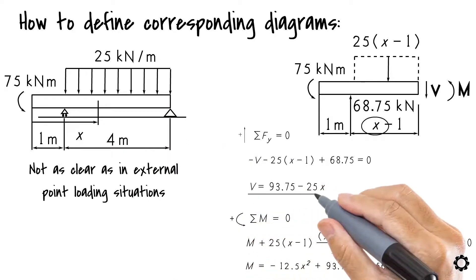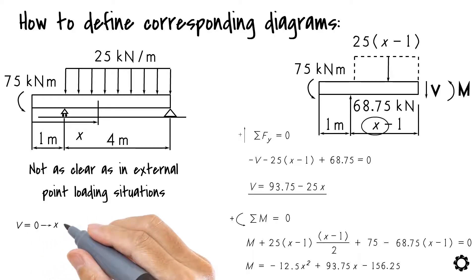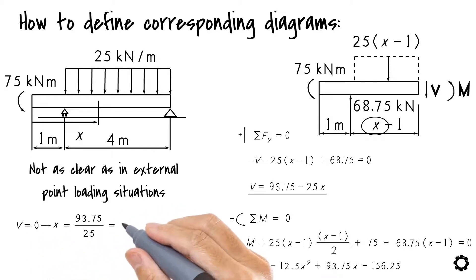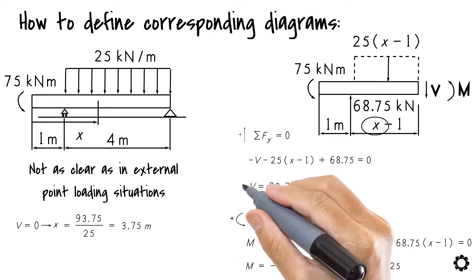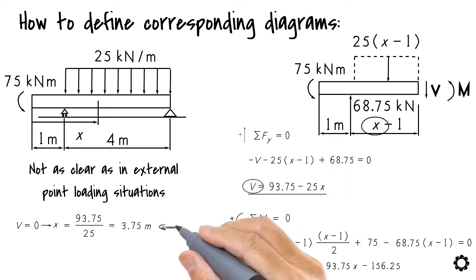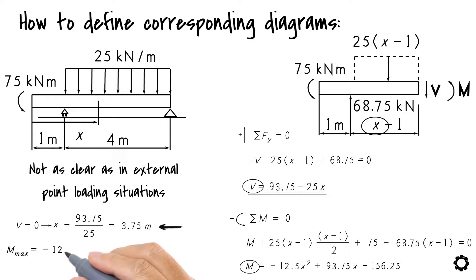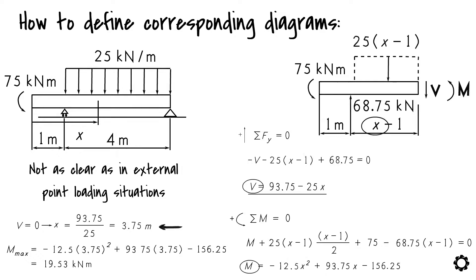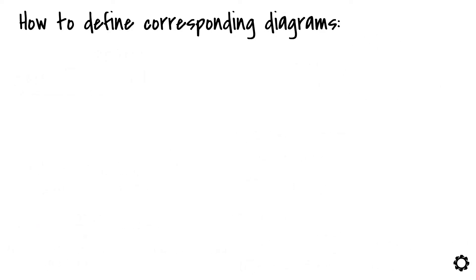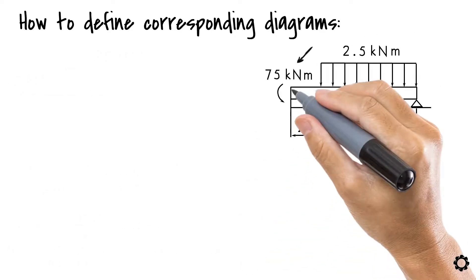We'll use the shear force equation to find zero points where the shear force crosses the horizontal axis of the shear force diagram. Because of the existing relation between shear force and the moment, those points will be candidate points for the maximum and minimum values of the moment diagram.